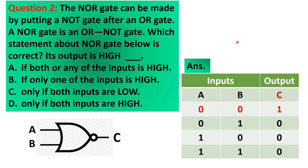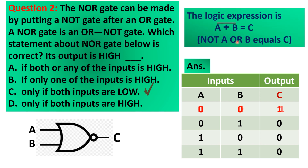Therefore, our answer for this question is letter C: only if both inputs are low. The logic expression for a NOR gate is written as A plus B with a bar above the input symbols, and this is read as NOT (A OR B) equals C.